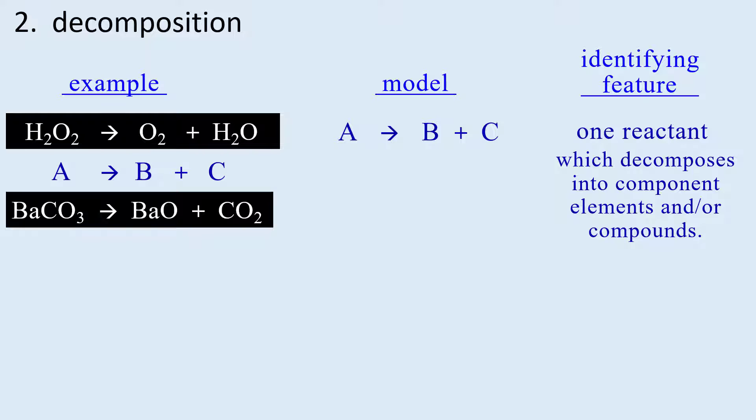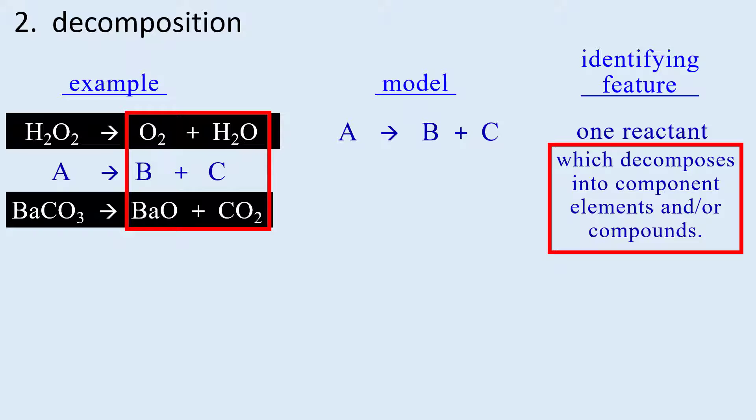Another example is the decomposition of barium carbonate. We see in the equation there is one reactant which decomposes into component elements and or compounds. Click on this link for predicting products and decomposition.